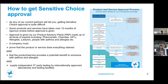Getting approved through Sensitive Choice is a rigorous process. In the last 12 months, 70% of applications have either been rejected or we've requested further information — so only 30% of products have been approved in the first instance. We have a product advisory panel made up of pharmacists, GPs, allergists, lawyers, engineers, and industrial chemists who meet every two months to review products.